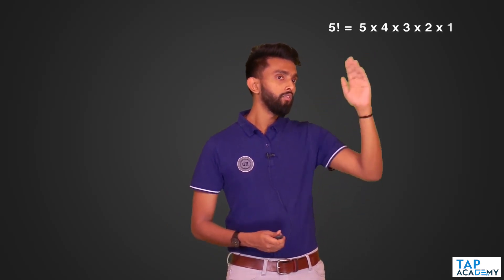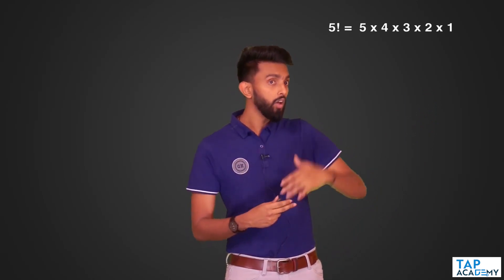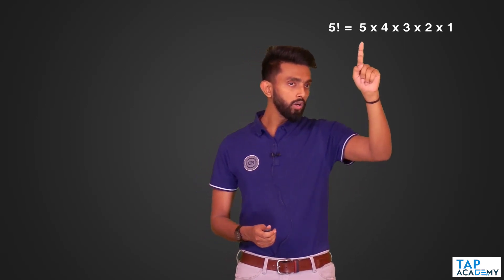5 factorial, as you all know, is 5 × 4 × 3 × 2 × 1. Another way of representing 5 factorial: to find the factorial of 5, I must multiply 5 with 4's factorial. That is also a valid way of looking at it, which means this can be written as 5 × 4 factorial.